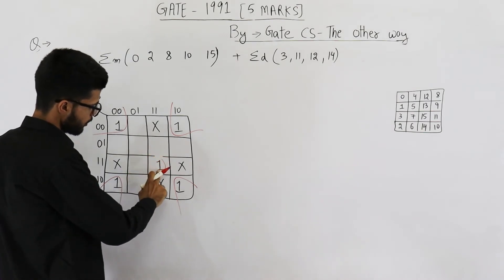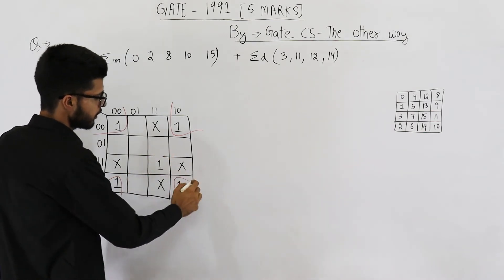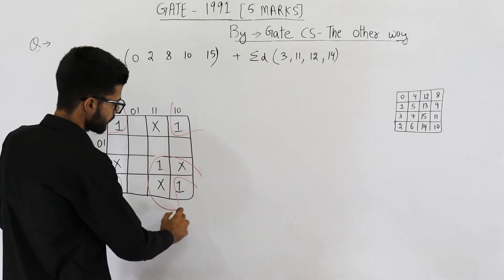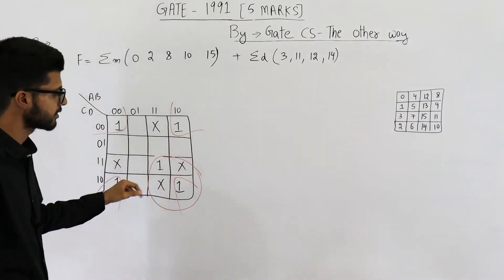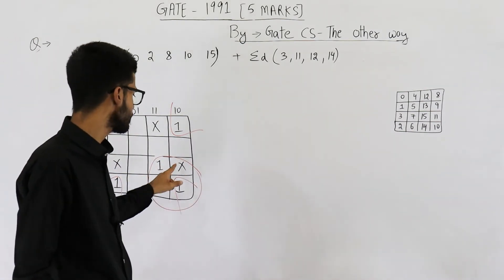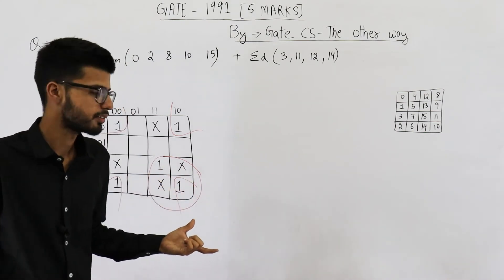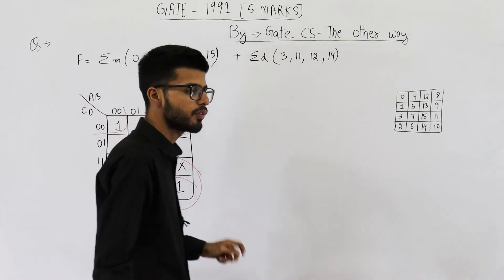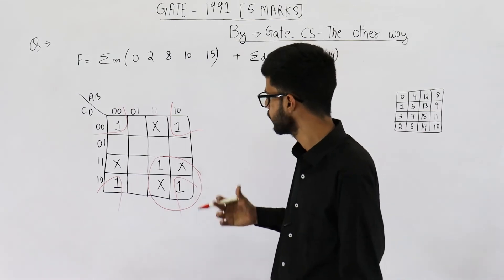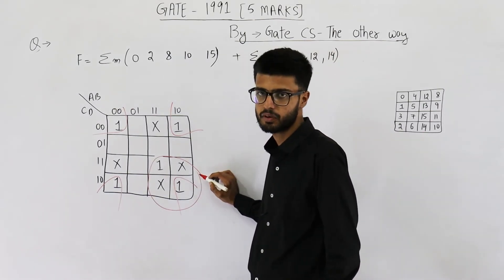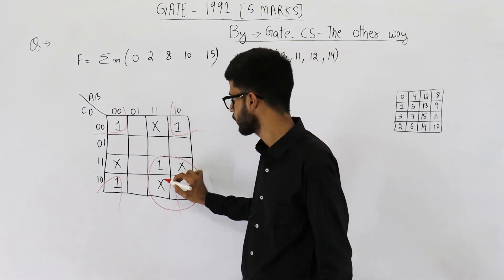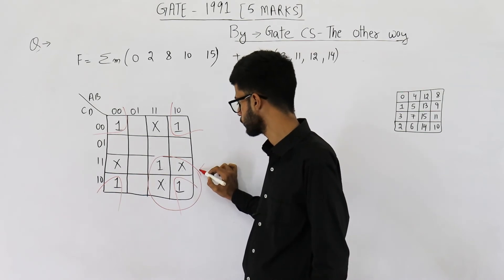First thing is you can make a group of this one like this. Apart from this, you can do one more thing. You just include all of these four. This is a better choice because the size of group has increased. That's what I was saying. Whenever any don't care leads to increasing the size of a group, you include it. So we have included these two in this group.